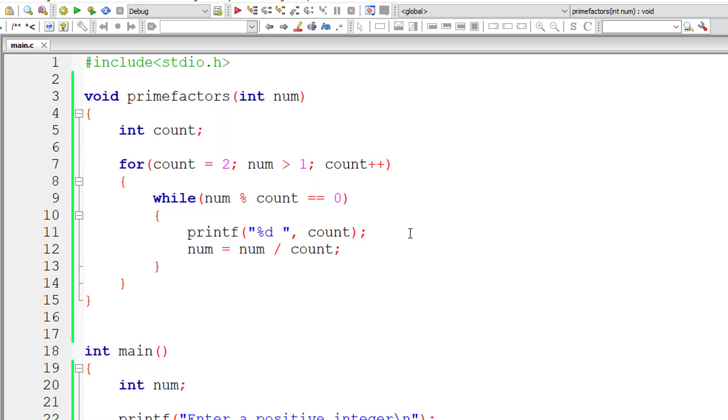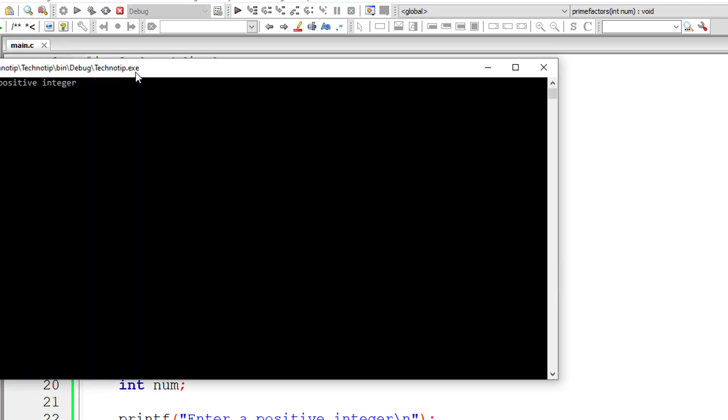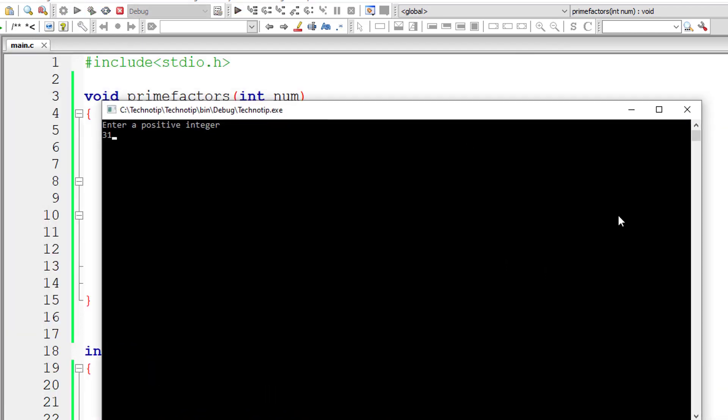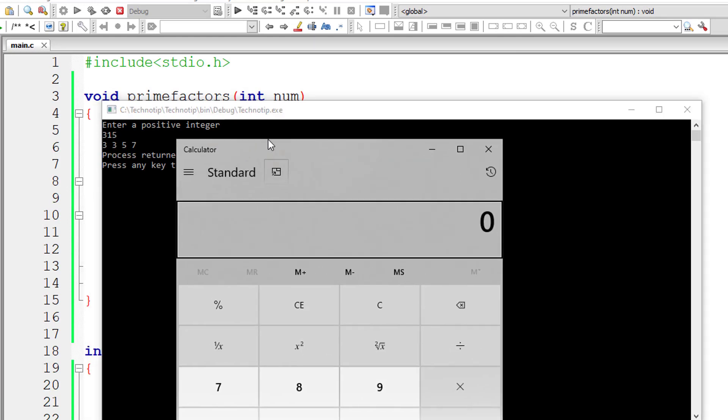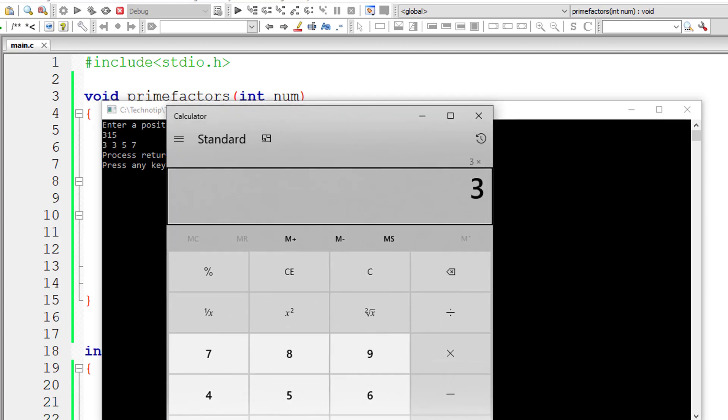Let me give a bigger number here this time around. So let me compile and execute it. I'll give maybe 315. So 3 into 3 into 5 into 7 is again 315. Let me show that to you. 3 multiplied by 3 multiplied by 5 multiplied by 7 is 315 which is user entered number.